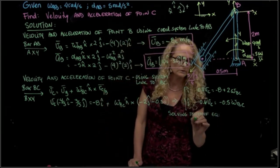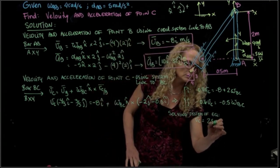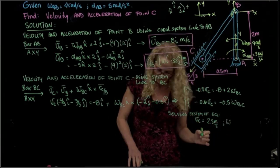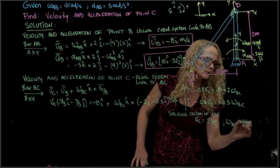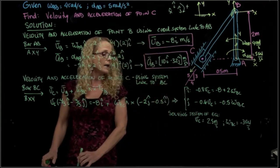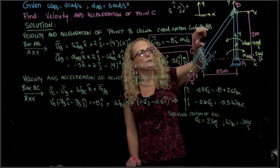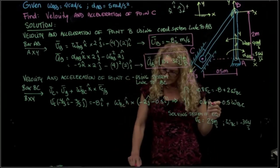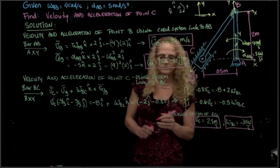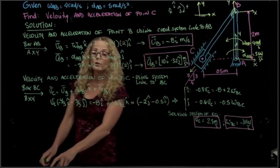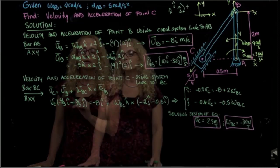Solving the system of equations, we get that the velocity of C is equal to 2.5 meters per second, and angular velocity of BC is equal to negative 3 radians per second. The negative value means we assumed the bar was rotating in one direction, but it's actually rotating in the other direction.